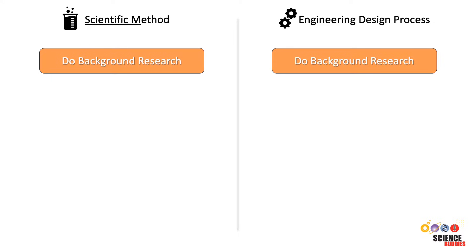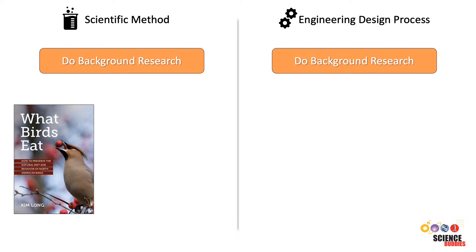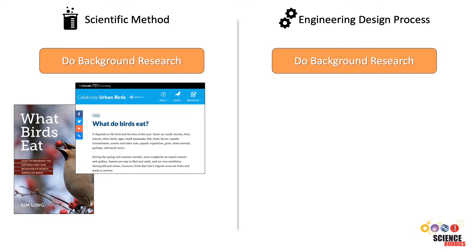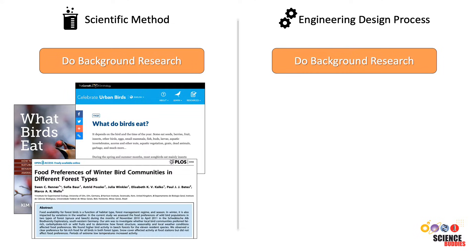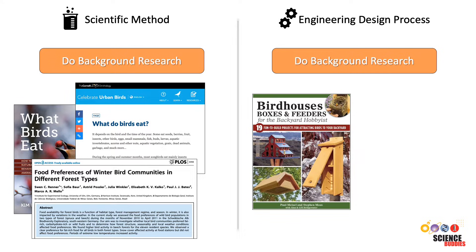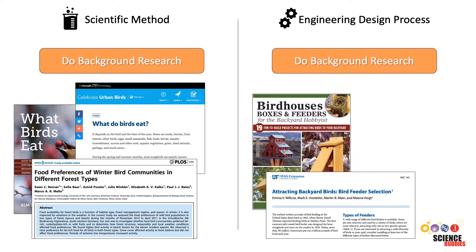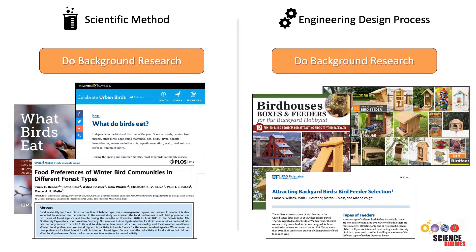The second step for both the scientific method and the engineering design process is to do background research. In our scientific method example, we might research what different types of foods birds eat or what other scientists have found out about birds' food preferences. In our engineering design process example, our research might focus on how other engineers have approached building a bird feeder, what challenges they encountered, what types of bird feeders already exist, and what types of birds use them.